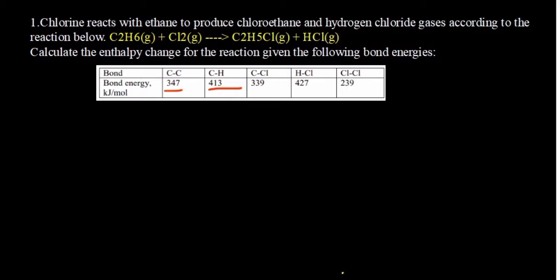So let's get to work. Whenever you're dealing with determining the enthalpy change from bond energies, it's very important that you draw the Lewis structures. In this case we have C2H6. So we have a carbon to carbon bond and we've got six hydrogen bonds around them. We need to determine how many of these bonds we have.